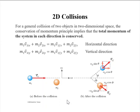We can have collisions that are not simply in line — 2D collisions, where objects move in either the X or Y directions, or most likely at some diagonal. So we have to think in terms of components. For a general collision of two objects in two-dimensional space, the conservation of momentum principle implies that the total momentum of the system in each direction is conserved. In other words, we have to apply conservation of momentum in both the horizontal direction and the vertical direction.